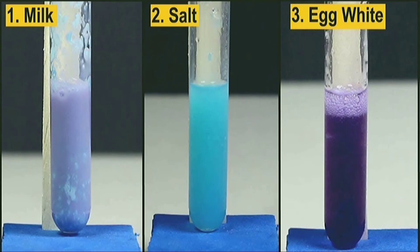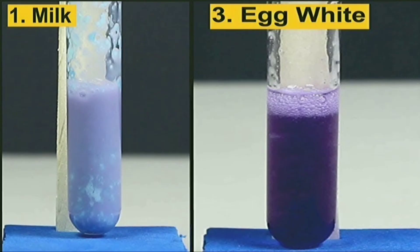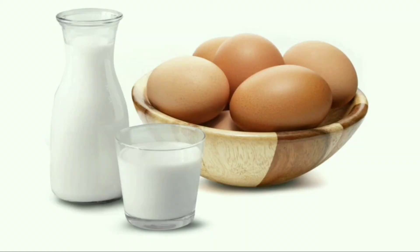The first test tube with milk turns light violet in colour. The second test tube with salt water turns blue in colour. And the third test tube with egg white turns dark violet in colour. The violet colour indicates the presence of proteins. Since egg white is a very rich source of proteins, it turns dark violet. That is why, to be healthy, you need to have a glass of milk and a boiled egg every day.